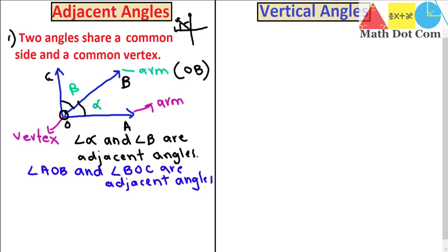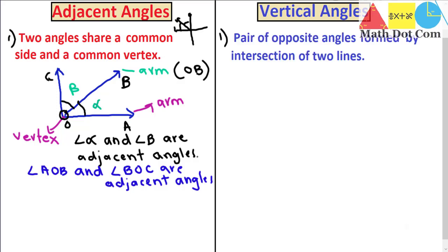Then we have vertical angles. I have explained vertical angles in my previous lecture in detail, but here I will give you a short introduction. Vertical angles are defined as the pair of opposite angles formed by the intersection of two lines. If we have two lines like this, they can be at any angle between them, but they must intersect each other.